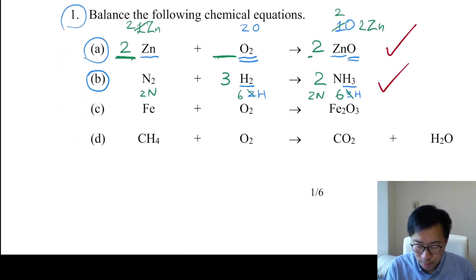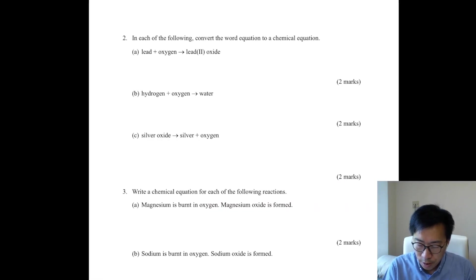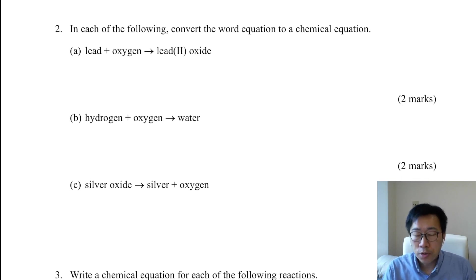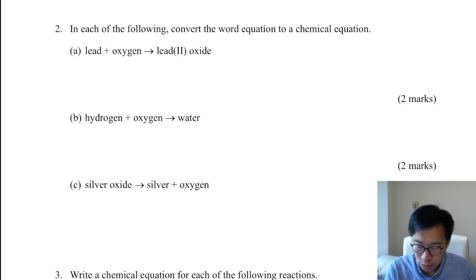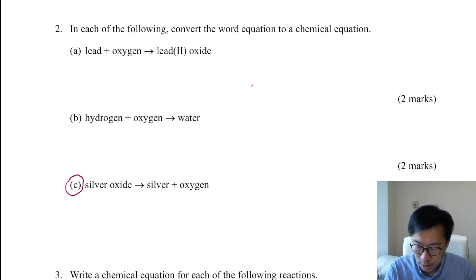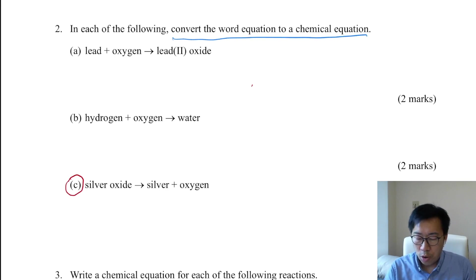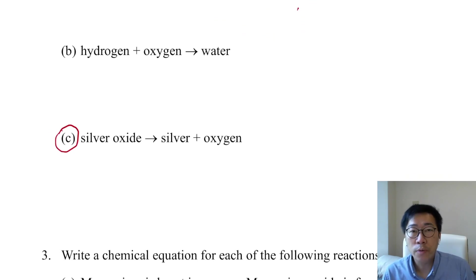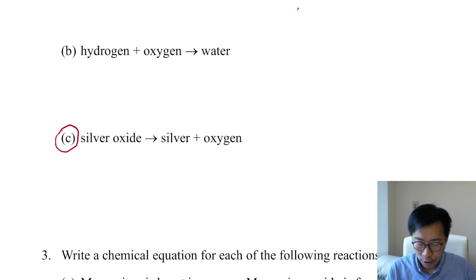Let's move on to some other exercises. I have question number 2 here. Let me demonstrate part C. This time, you are asked to convert a word equation into a chemical equation. Your task, first of all, is to convert all the reactants and products from names to formulas or symbols.